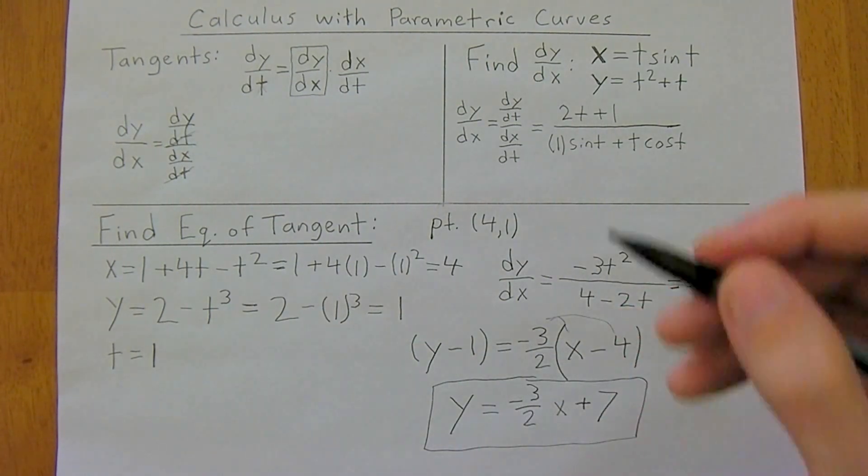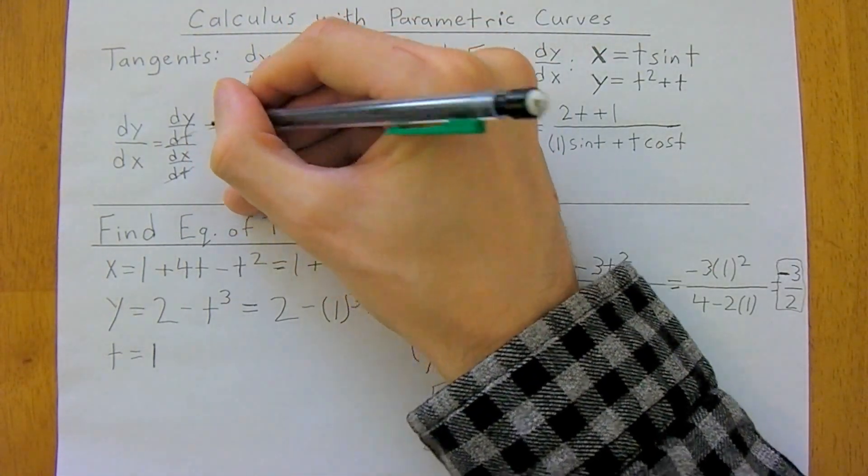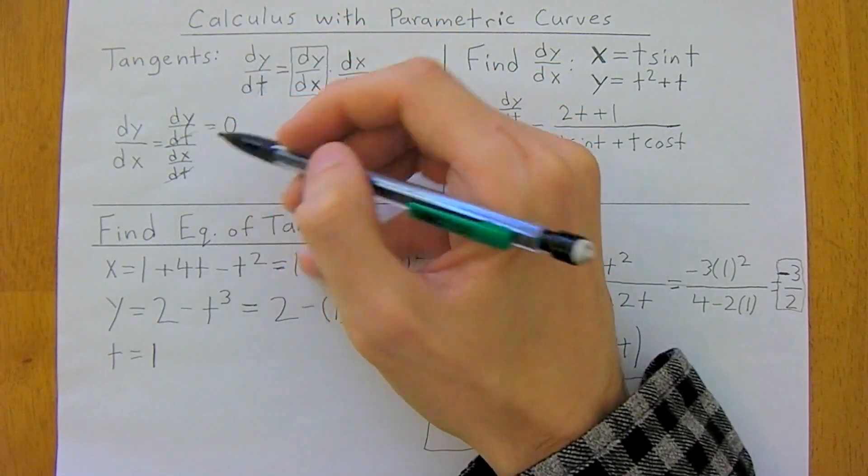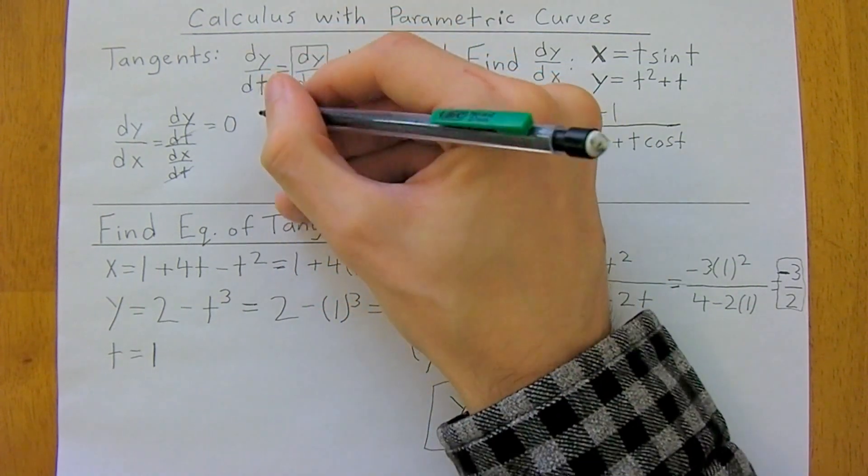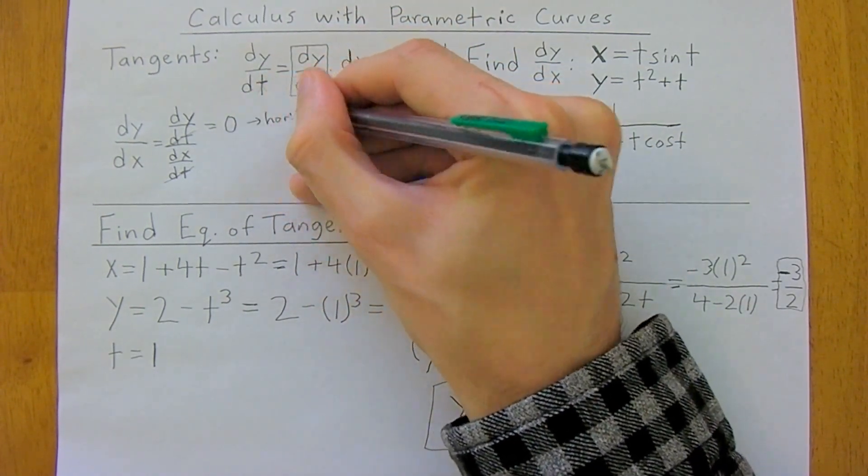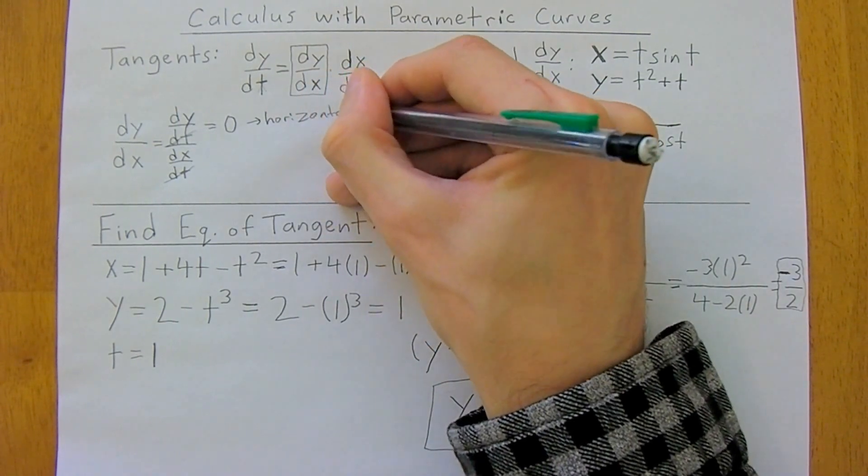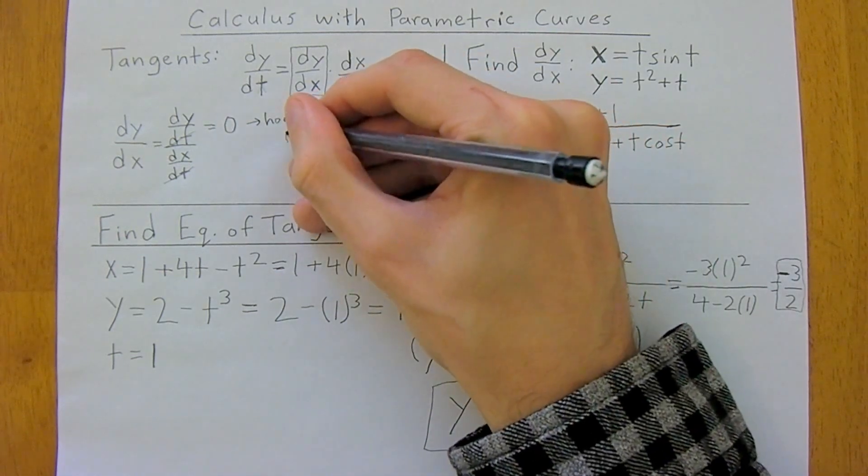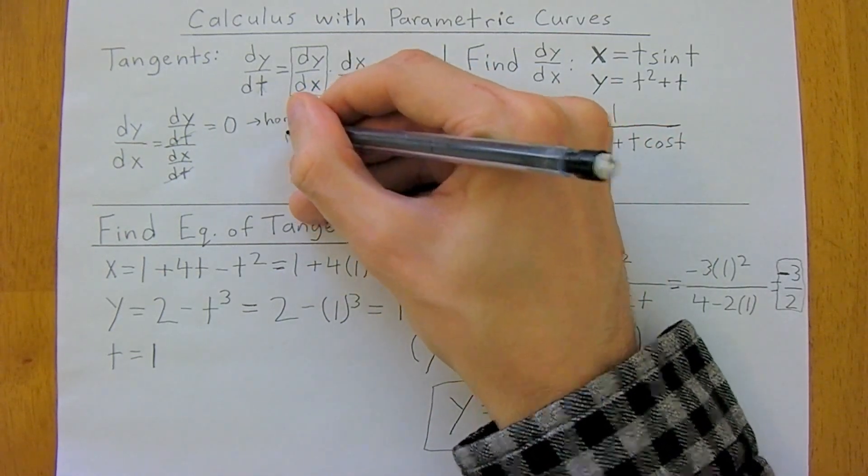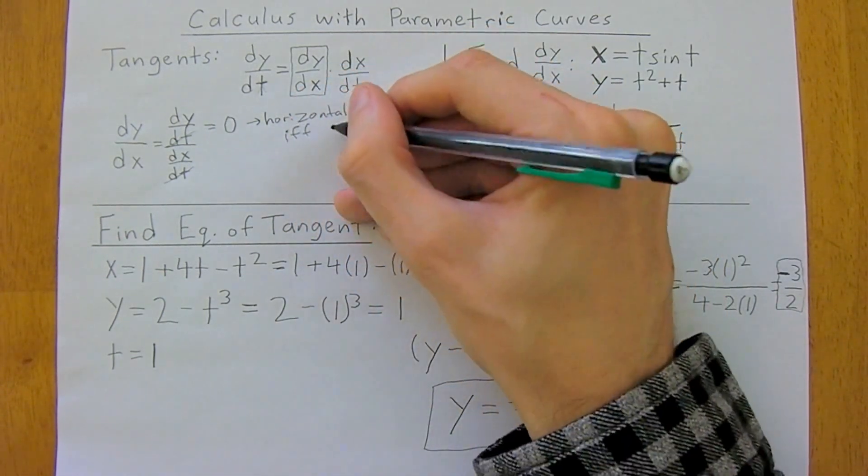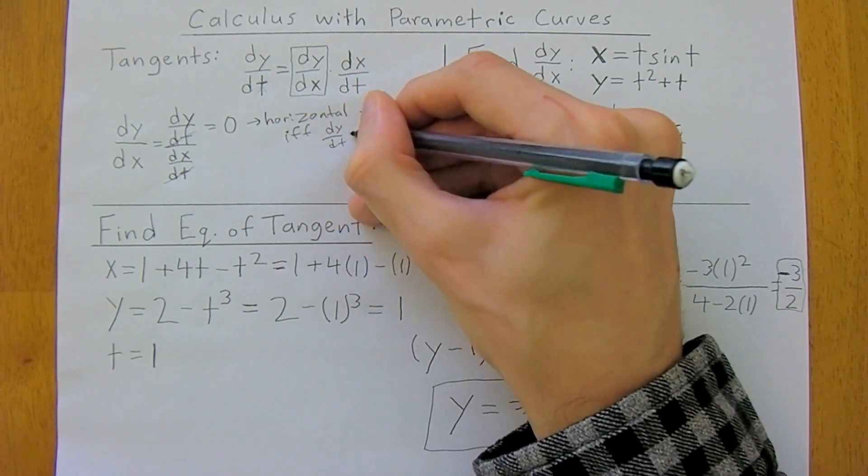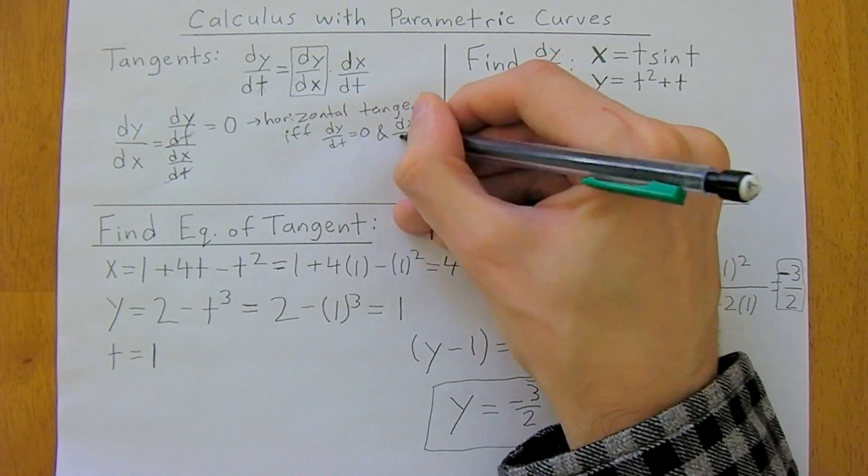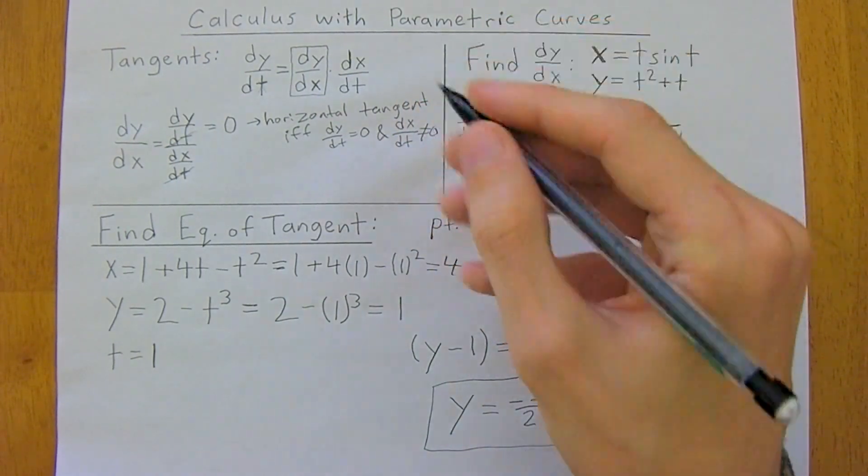And it's also important to note, so say you wanted to find a horizontal tangent. Well, that's going to happen when the change in y with respect to t is equal to 0. So this will give you a horizontal tangent if, and this IFF here means just if and only if, dy over dt equals 0 and dx over dt cannot equal 0.